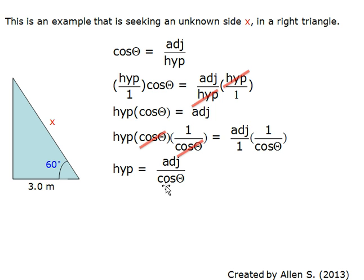We substitute the numbers given. 3.0 meters divided by cosine of 60 degrees, or 3.0 meters divided by 0.5.